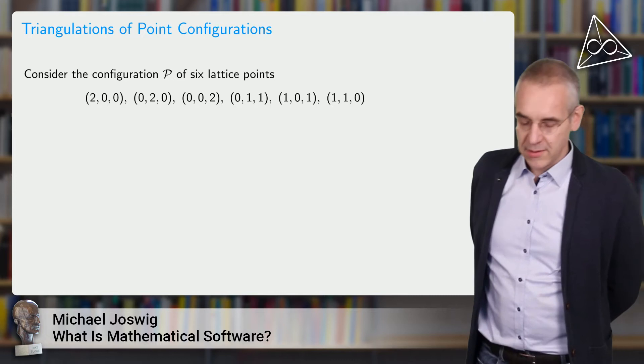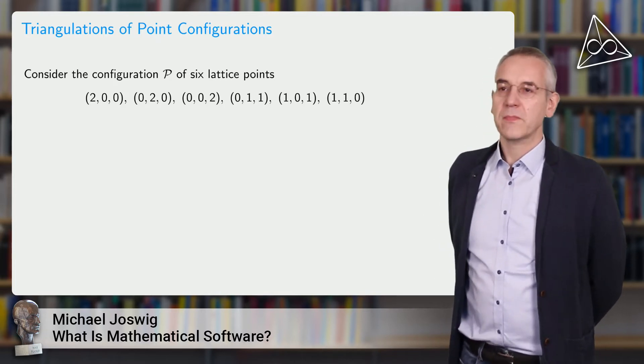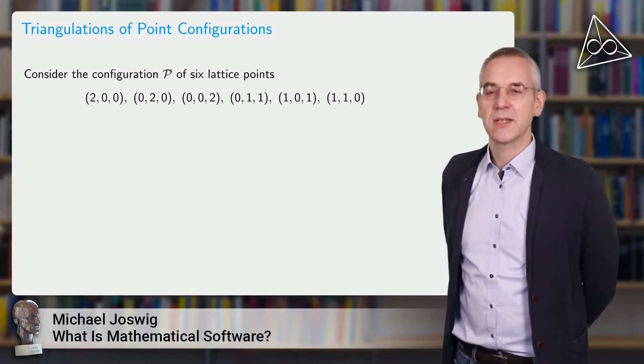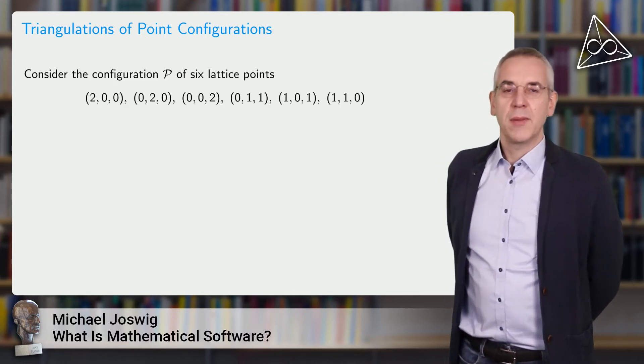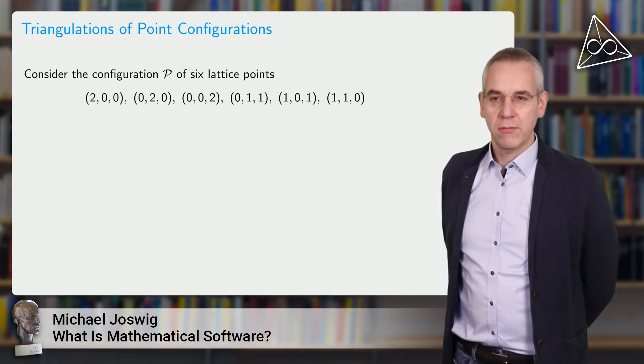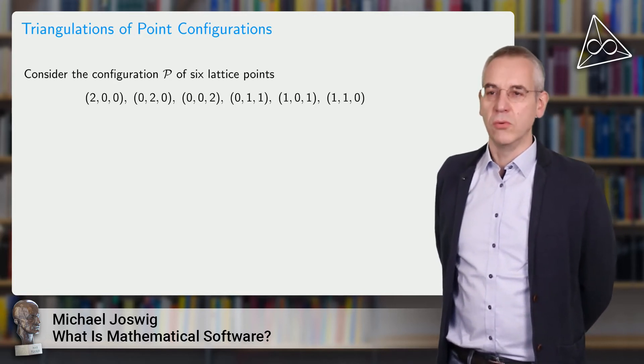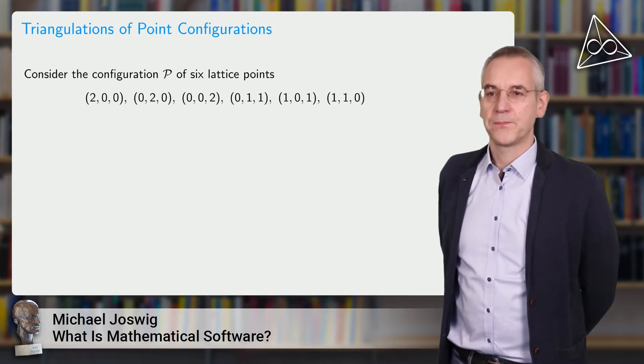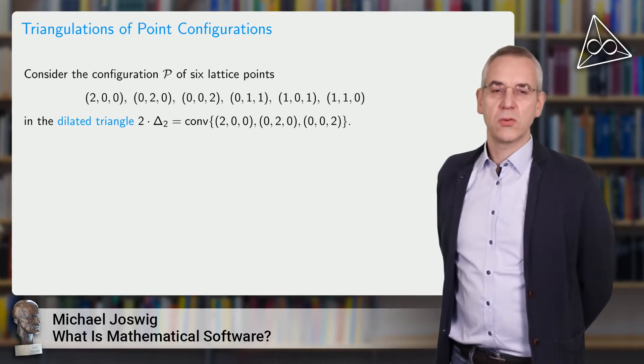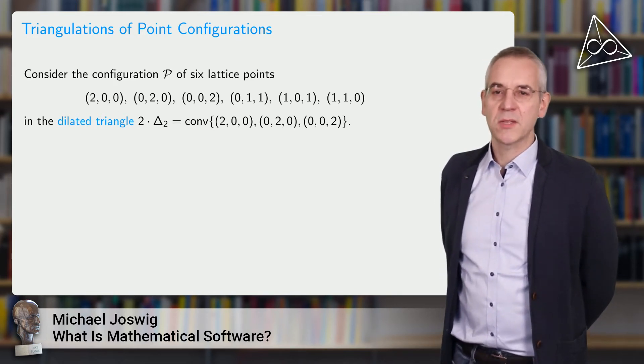Let's go on to the next example. This is something that I would like to explain in slightly more detail. The mathematical objects that we are interested in here are triangulations of finite point configurations. Here is an example. I have six lattice points in three-dimensional space but they lie on the plane where the sum of the coordinates equals to two. I have six points in three space. All of the coordinates are integer numbers, non-negative integer numbers and they sum to two. There are exactly six of them and you see them here. These are actually the lattice points in the dilated triangle delta two. Delta two is just the convex hull of the unit vectors in three space and I scale these by the factor of two. That's this dilated triangle.